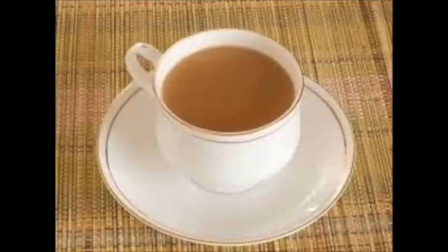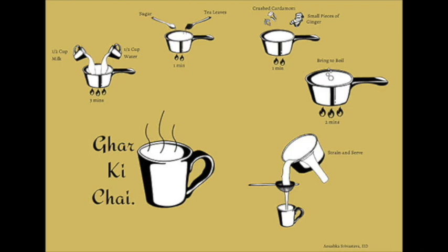If you have any ideas, you can share your answers in the comments. Now, think about what are the ingredients for making tea. We need tea powder, sugar, milk, and water. We also need a saucepan, a burner, and fire or heat. Just imagine the same process happening inside a plant.